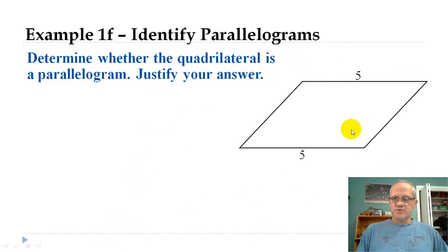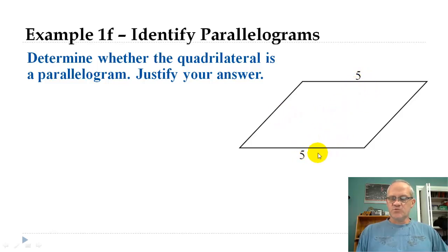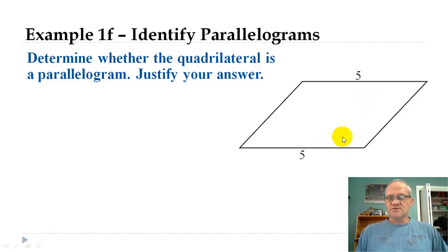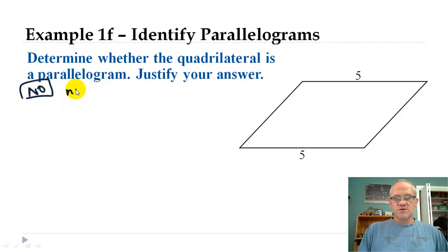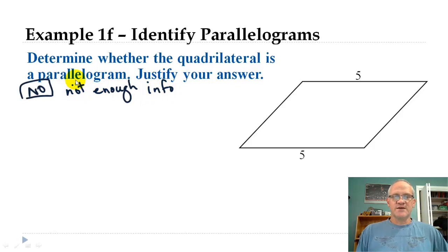What about this one? We know that the opposite sides are congruent, but we don't know anything else. That's not enough information, because what if these sides could be congruent but weren't parallel — what if this one was angled up a little bit? It wouldn't be a parallelogram because we don't know that it's parallel. So in this case, we would have to say no — there is not enough information.